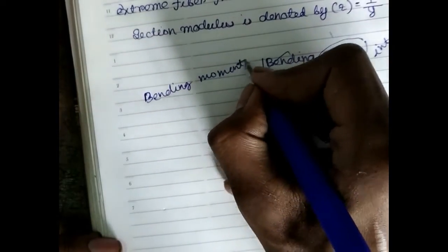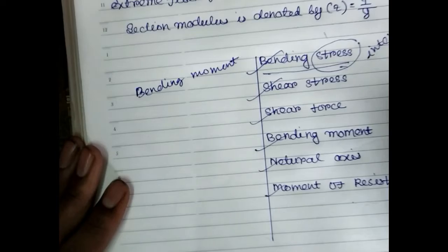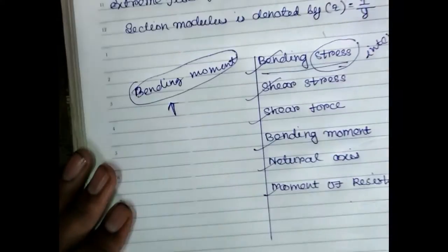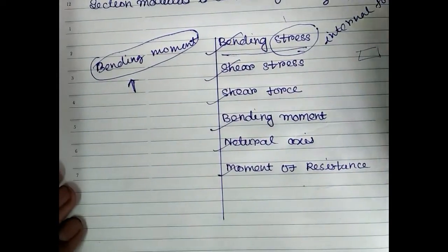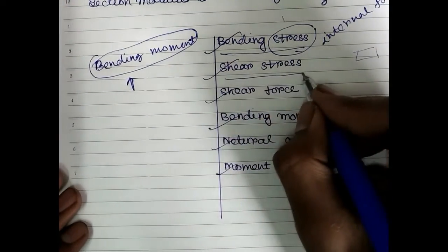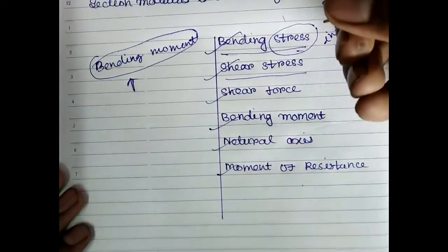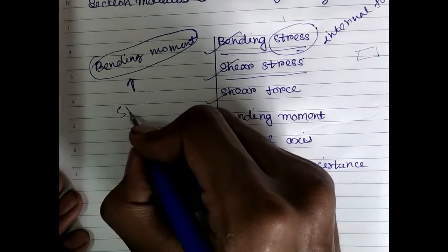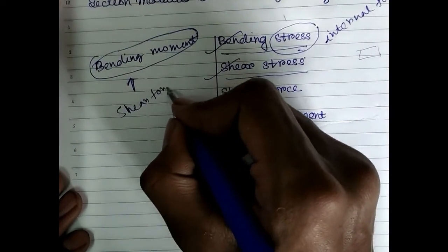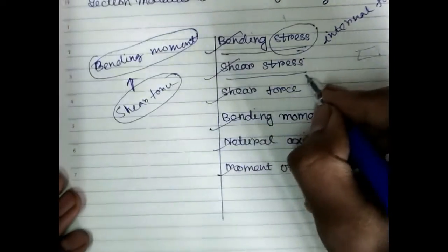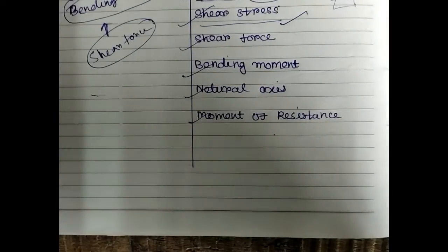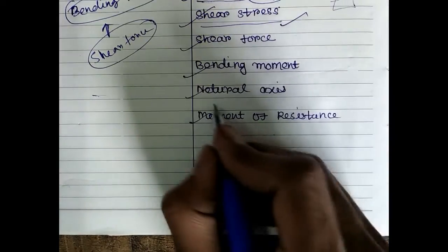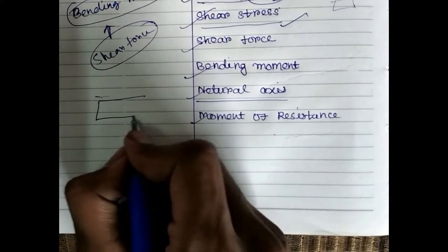The stress generated in the beam to resist the bending moment is called bending stress. And when we apply shear force, the stress generated on the section of a beam to resist the applied shear force is called shear stress.